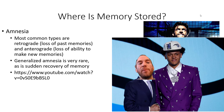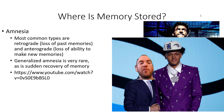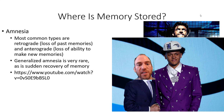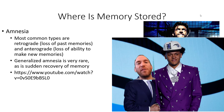Moving on to amnesia: the most common types are retrograde — loss of past memories — and anterograde — loss of the ability to make new memories. Generalized amnesia, losing all memories, is very rare, as is sudden recovery. Classic examples include the films Memento and 50 First Dates, in which a character is unable to create new memories and must reform relationships every day. The amygdala and hippocampus interact to give us emotional memories: the amygdala helps recall emotions associated with fearful events, the hippocampus helps recall the events themselves.